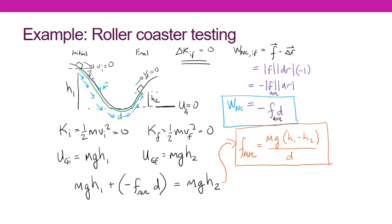We should always check our units. On top we have mass times acceleration — kilograms times meters per second squared — which is a Newton. We multiply by a height difference (a distance) and divide by a distance, so those cancel, leaving just Newtons, a unit of force. Our units work out, so this is likely the correct answer and we have a formula that gives us the correct result.